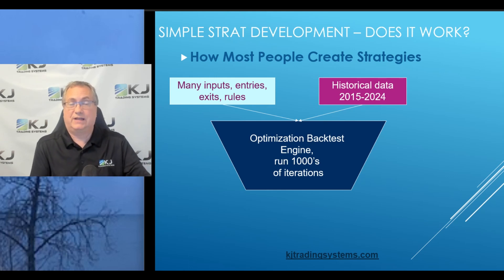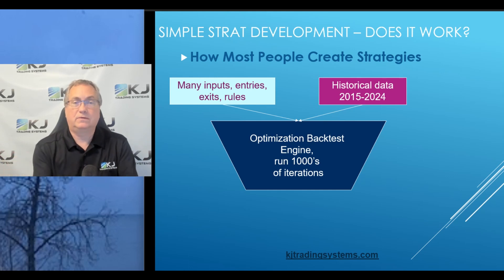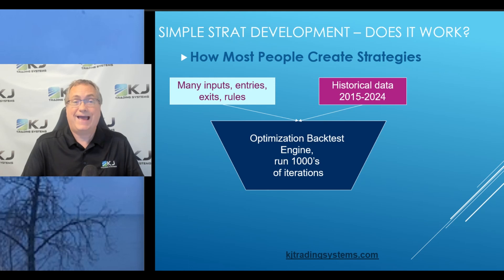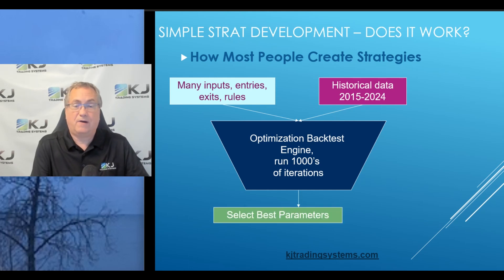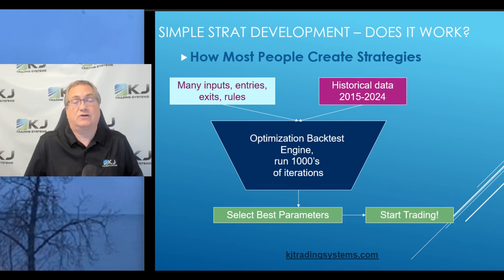One thing that most of those platforms do is encourage you to optimize. You know, if I have a moving average length, should I use five or should I use ten? Well, why not optimize it and try five, six, seven, eight, nine, ten and see which is best? The software is built so it makes it really simple to do that. You can run thousands or millions of iterations — and that's what most people do. They put everything together, let the computer do the work, crank it out, get their best parameters. Oh, a moving average of eight and a stop loss of $2,184 — that's what I should use. And then they go and start trading with it.